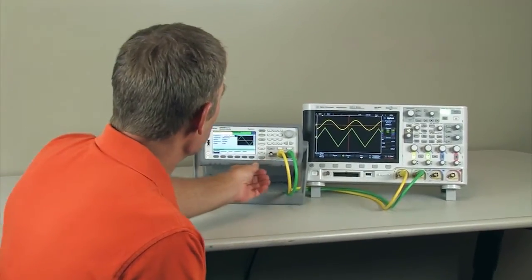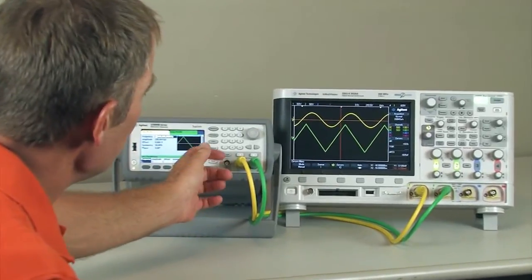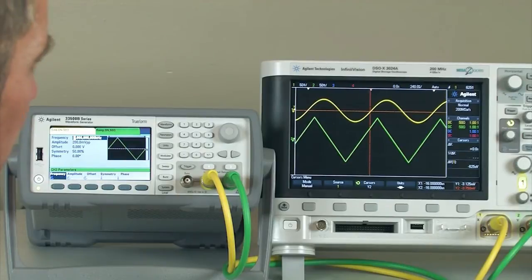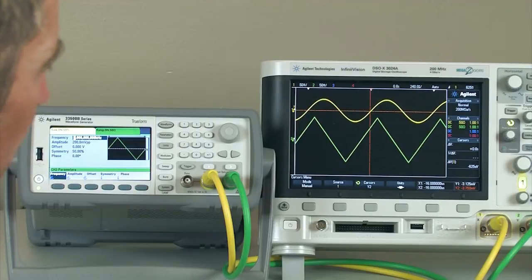When we first start the waveform generator in its default mode, the two channels work independently. We can set up different waveforms on each channel. We can have different amplitudes and different frequencies. I've chosen the same frequencies for these signals. And at this point,